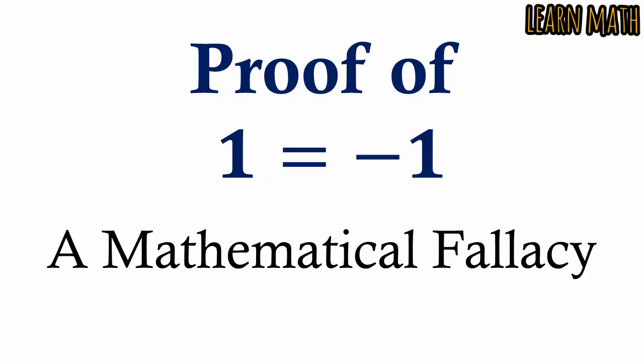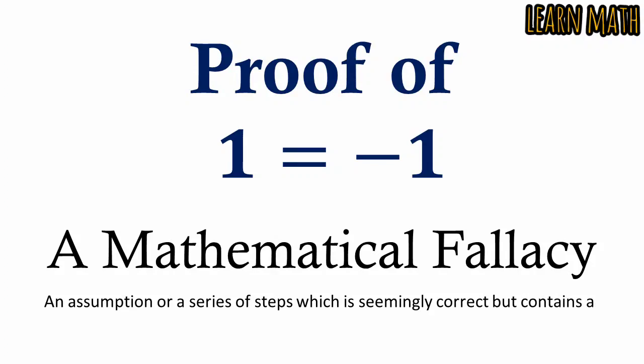What is a mathematical fallacy? A mathematical fallacy is an assumption or a series of steps which is seemingly correct but contains a flawed argument.